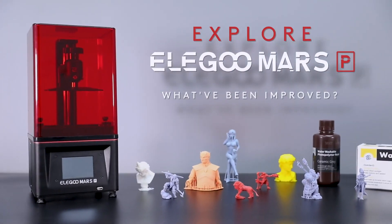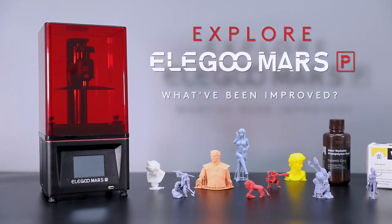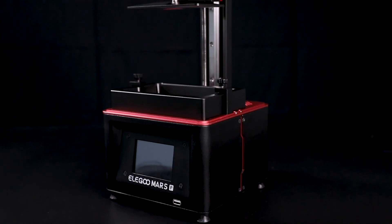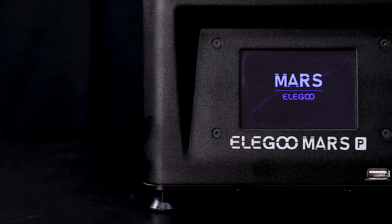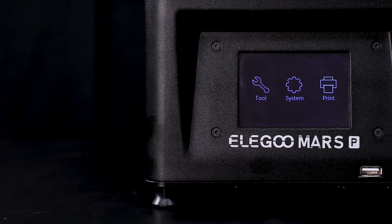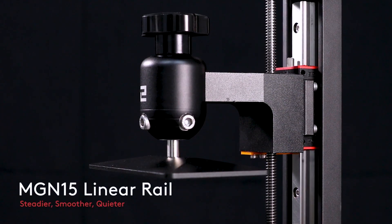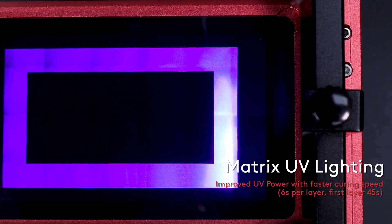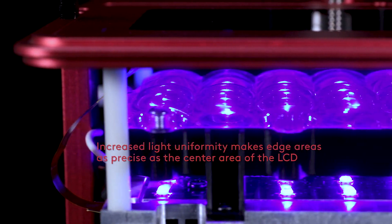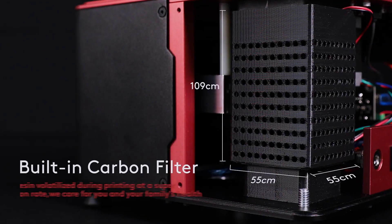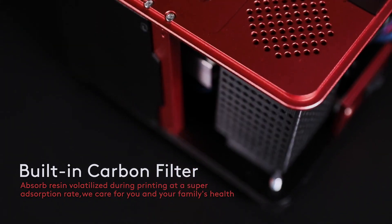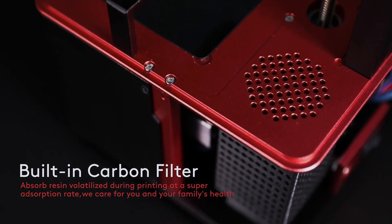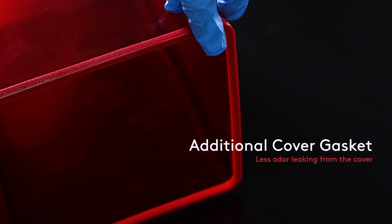For number 4, the Elegoo Mars Pro. This printer uses an LCD with 2K resolution to cure the resin. It has a matrix light source consisting of 28 50W ultraviolet LED lights that have uniform light emission. This cures the entire layer simultaneously which increases printing speeds and curing times. It has a build volume of 120x68x155mm and has a selling price of $239.